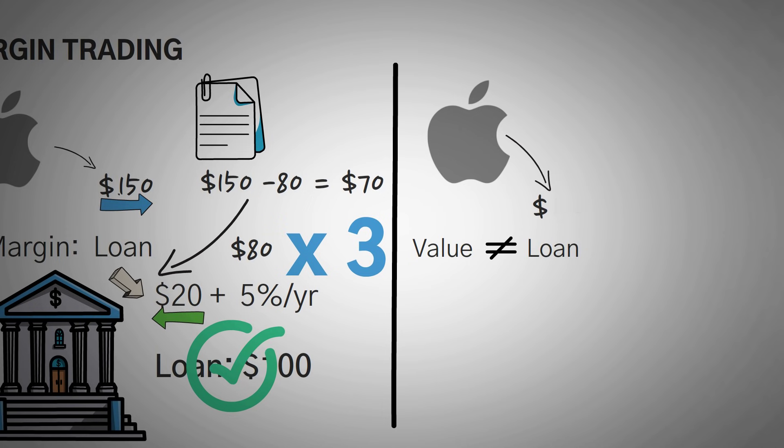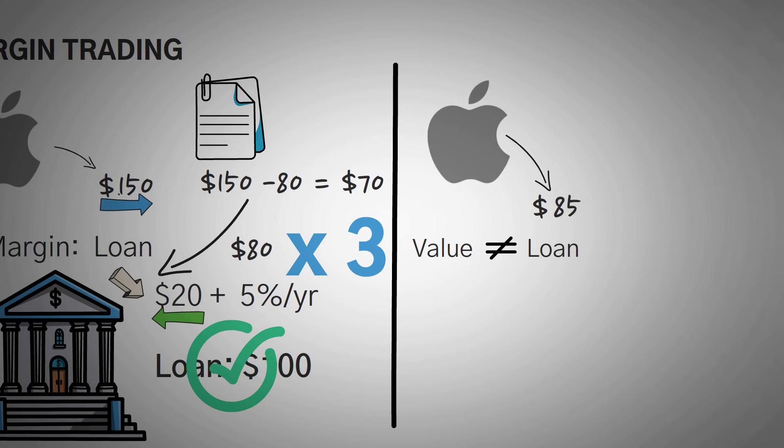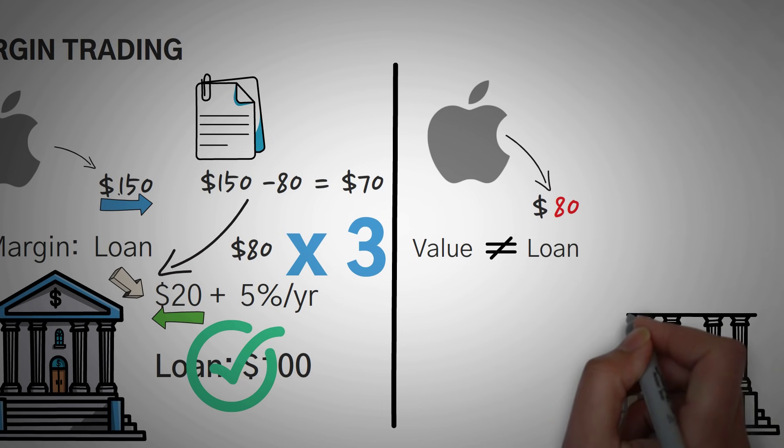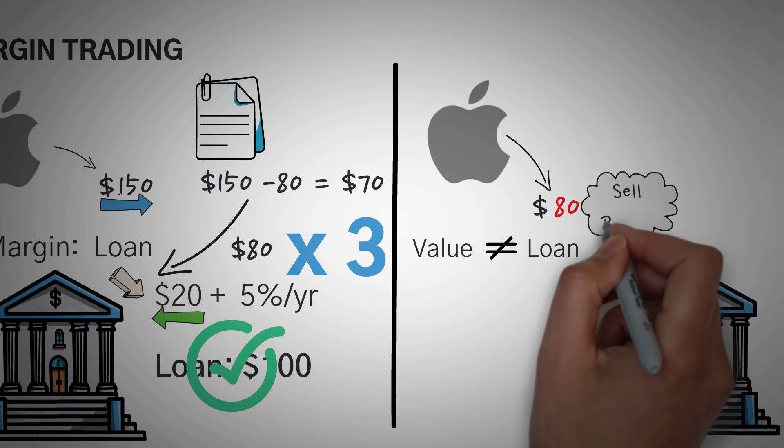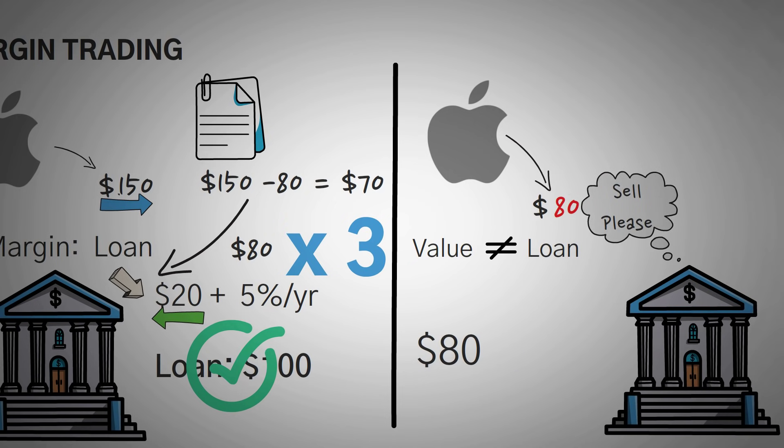So the stock starts out at $100, then it starts dropping, $90, $85. And then as soon as it hits $80, boom, the bank forces you to sell your one stock of Apple at $80 so that you can pay them back those $80 that you borrowed.